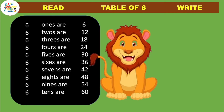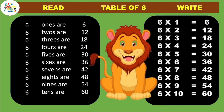Once more. 6 one's are 6, 6 two's are 12, 6 three's are 18, 6 four's are 24, 6 five's are 30, 6 six's are 36, 6 seven's are 42, 6 eight's are 48, 6 nine's are 54, 6 ten's are 60.